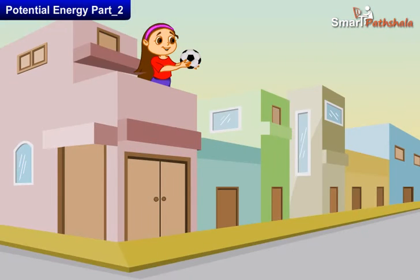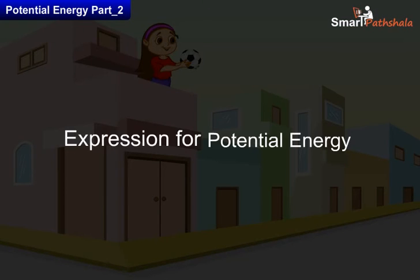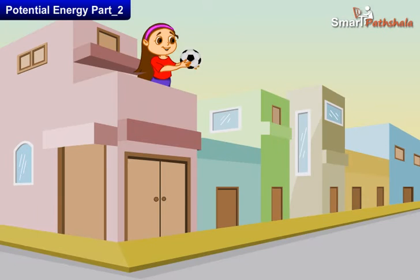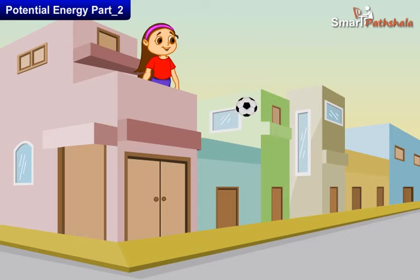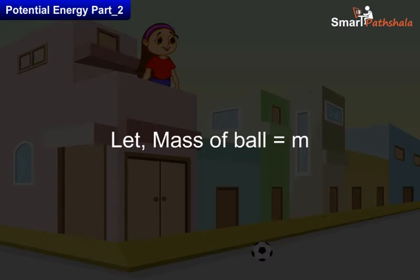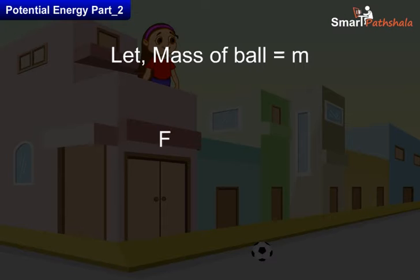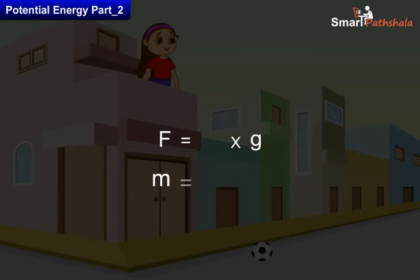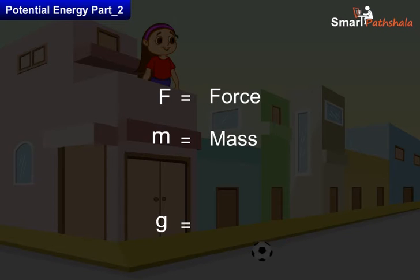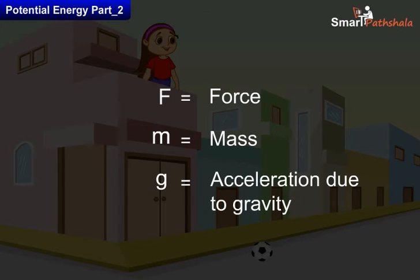Now let's discuss the numerical expression of potential energy. A ball of mass M is placed over a height H against gravity. Therefore, the minimum force required to do work, where F is force, M is mass, and G is the acceleration due to gravity.